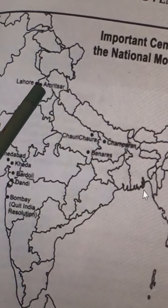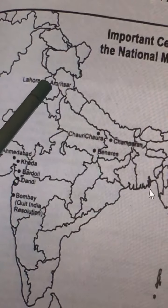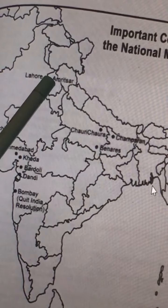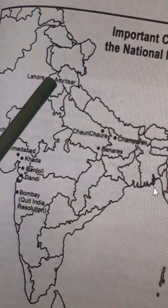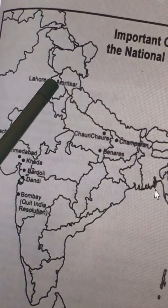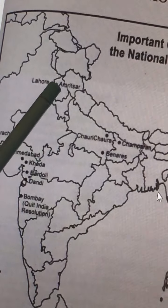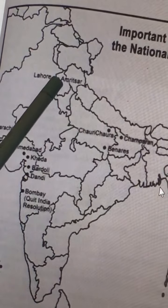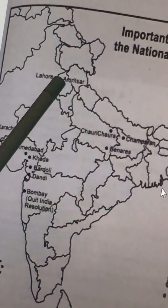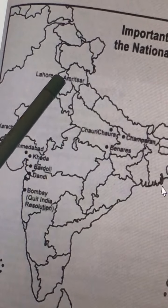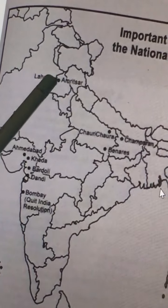In 1919, the Jallianwala Bagh Massacre took place. Jallianwala Bagh is an important garden, and the massacre occurred there in 1919. After this incident, Gandhiji launched the Rowlatt Satyagraha and also a movement in response.